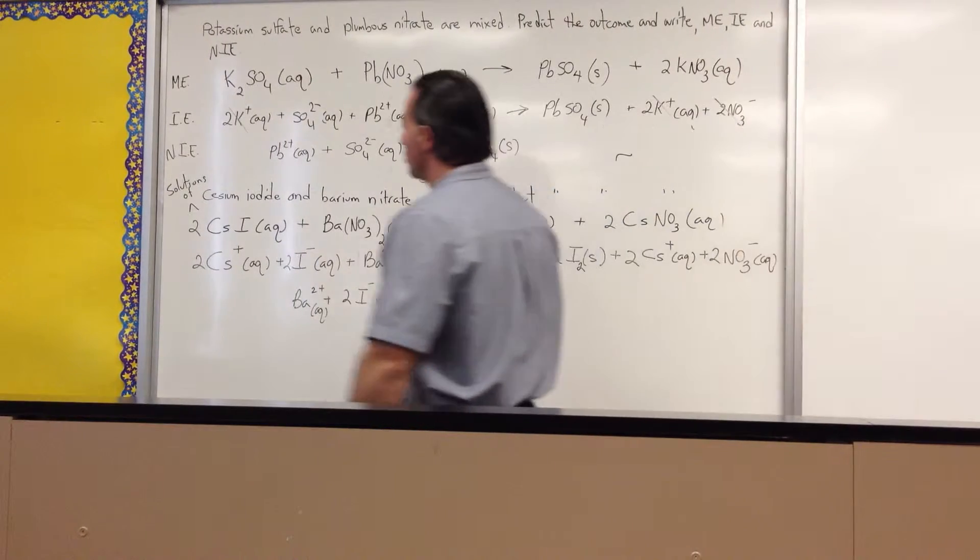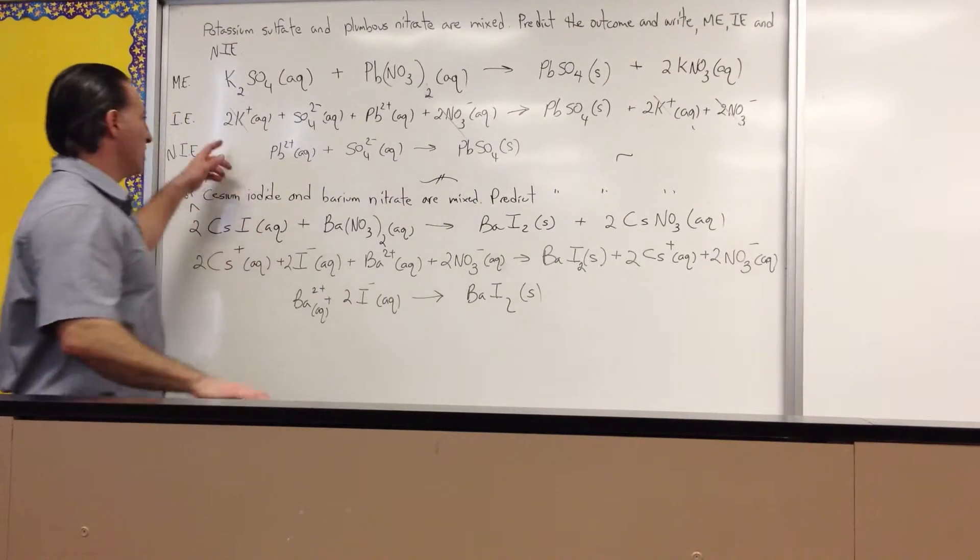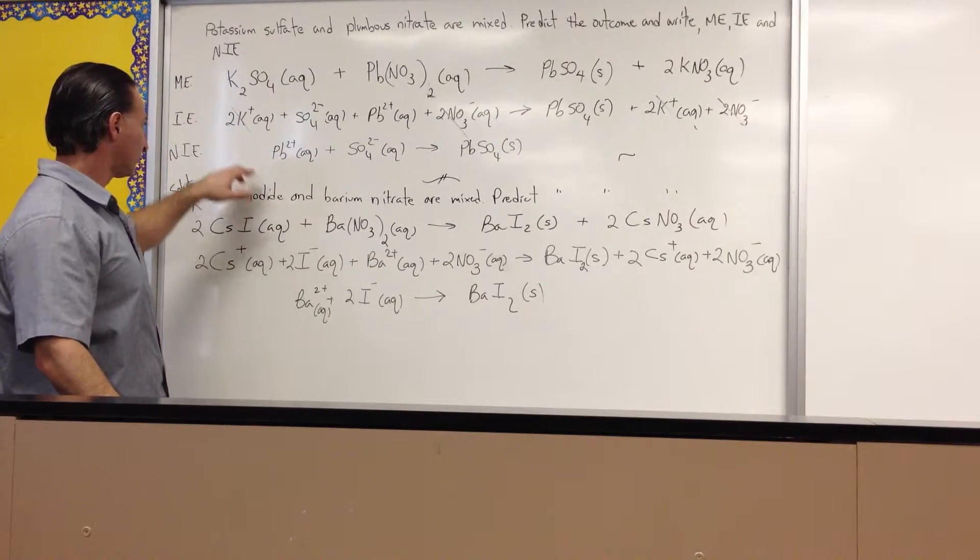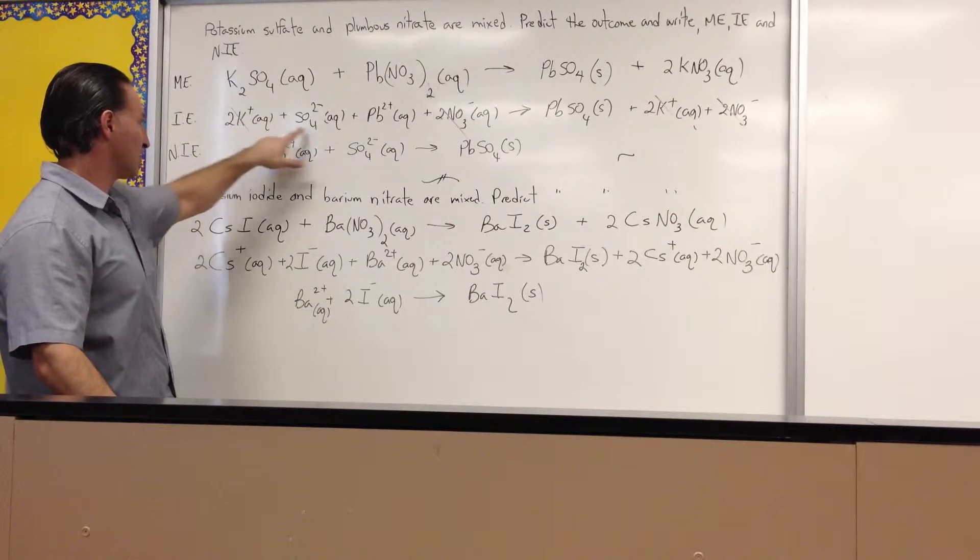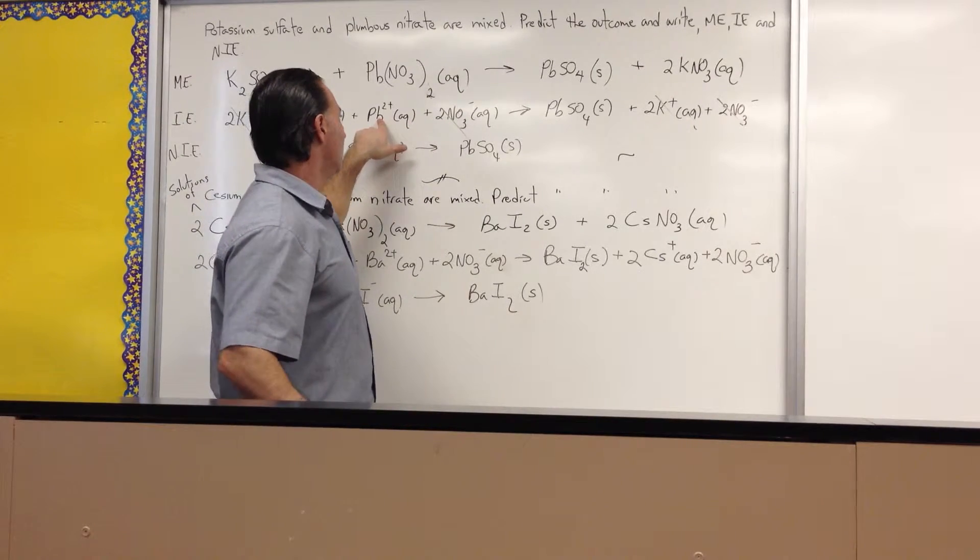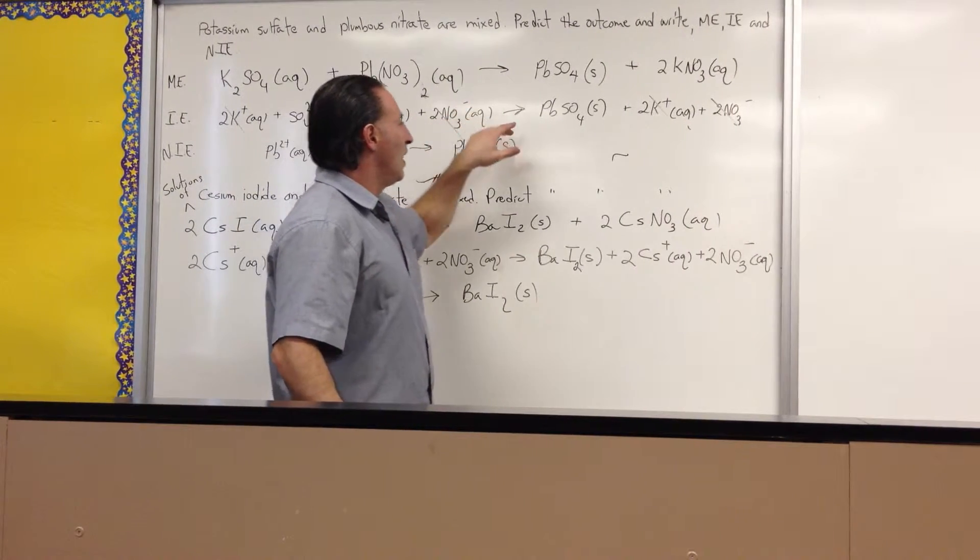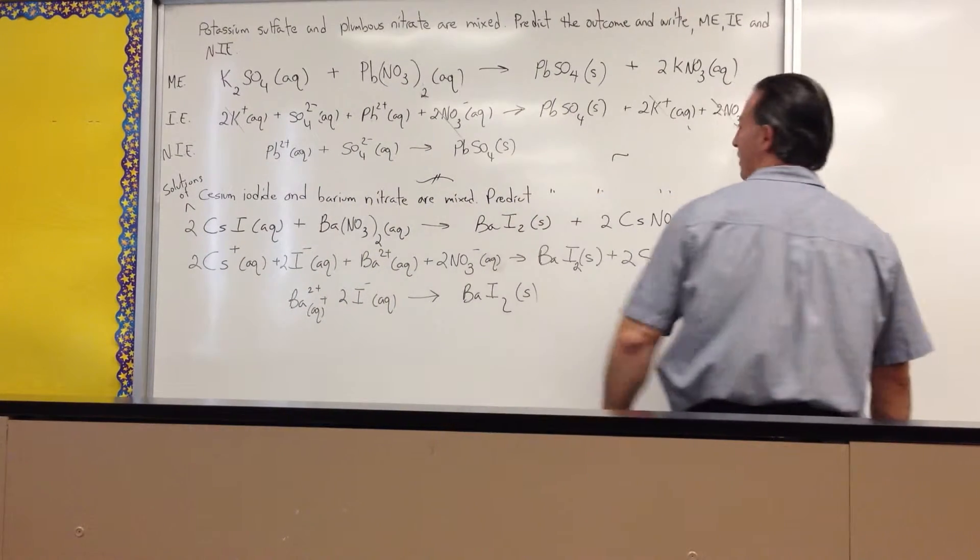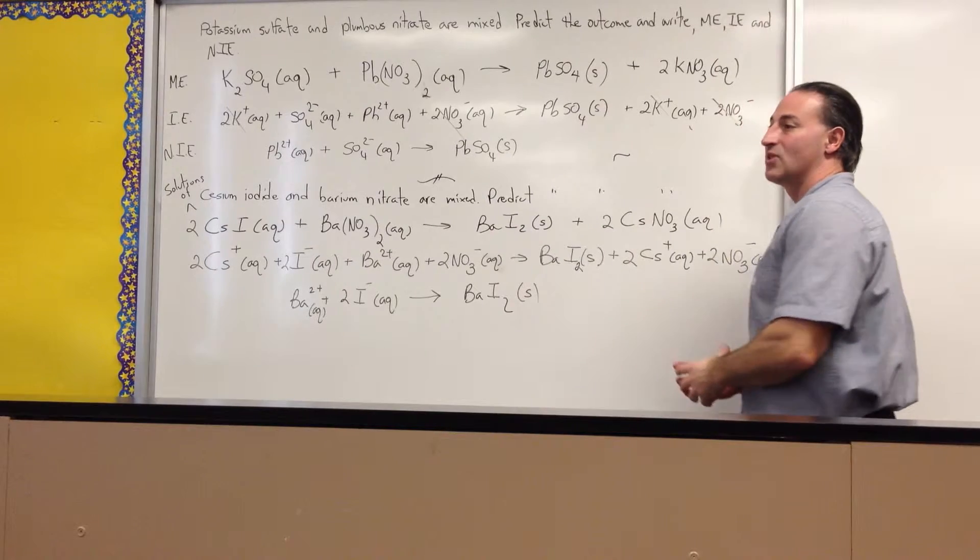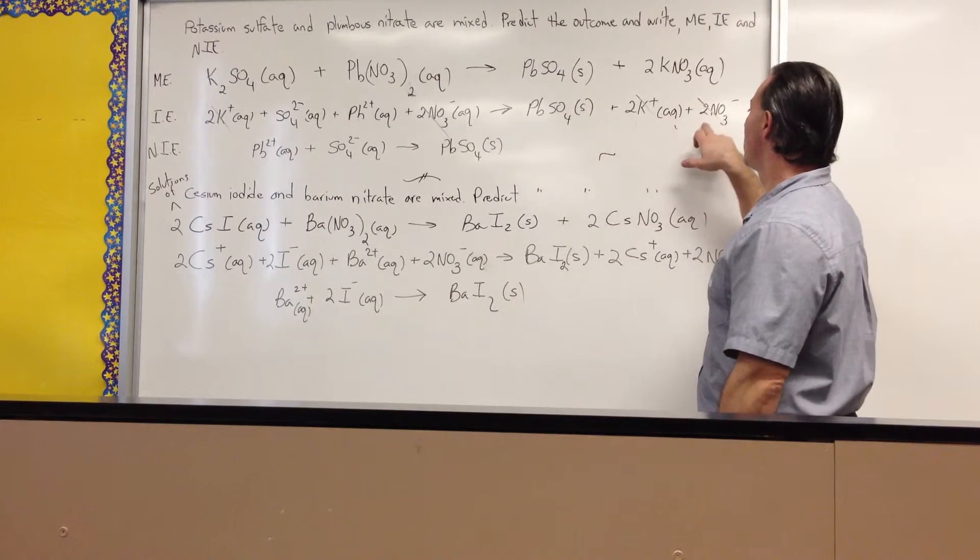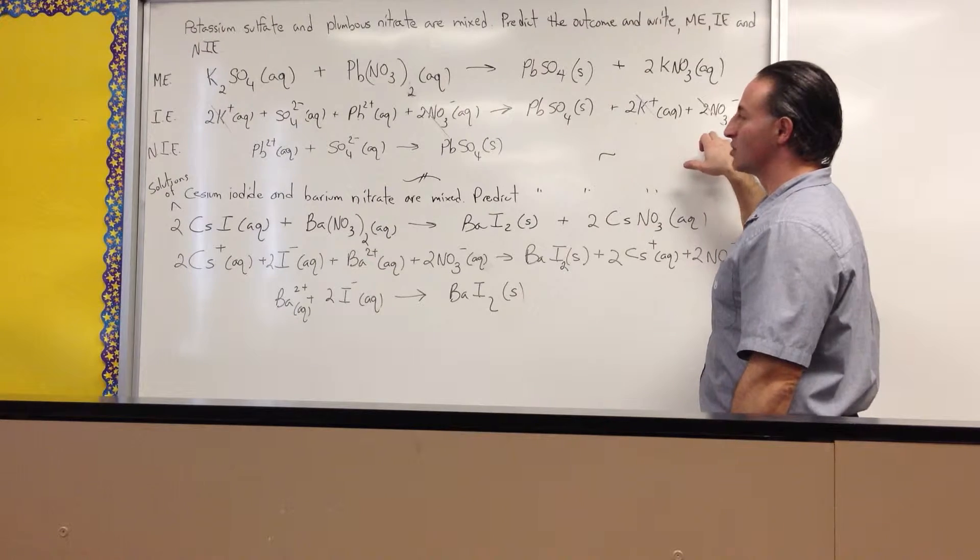But the ionic equation shows what happens when all these things hit water. They dissociate into their respective cations and anions. You see what potassium sulfate gives rise to. Lead nitrate gives rise to these two ions. And when lead cations interact with sulfate anions, they form an insoluble salt. So, they precipitate out and get solid. These two are soluble in water, so they remain in solution.